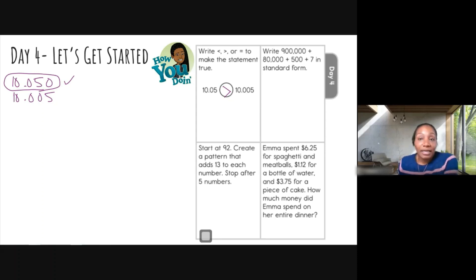Second question, write 900,000 plus 80,000 plus 500 plus seven in standard form. Standard form means to write it as one number. The best way to do that, it's telling you what to do. Let's go ahead and we're going to add the numbers up. We're going to line up those place values. So we have 900,000, 80,500, and you see that I'm being very careful to line the numbers up in their place value. And then seven is in the ones place.